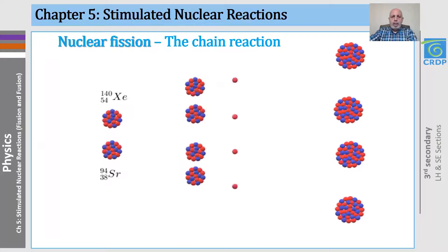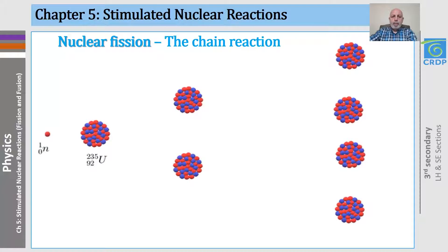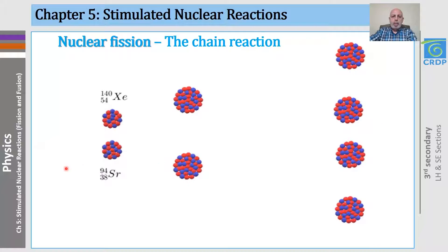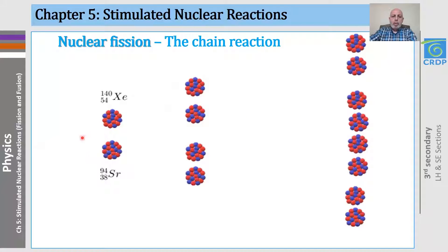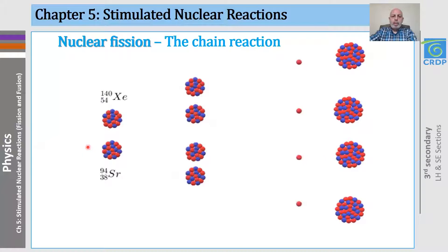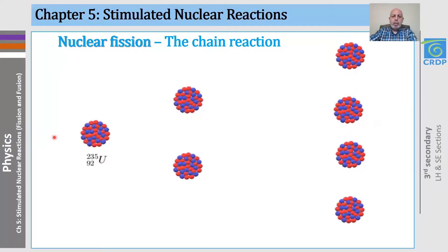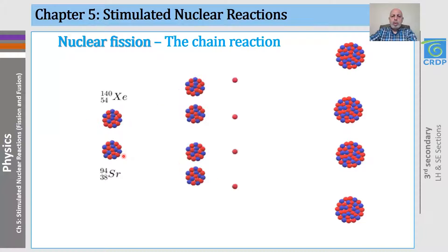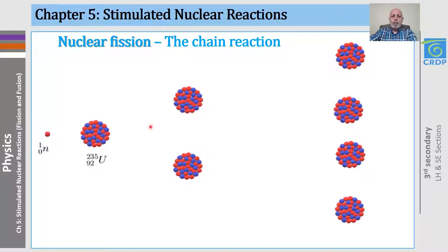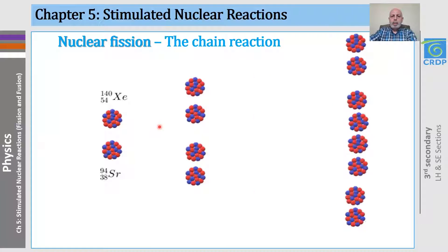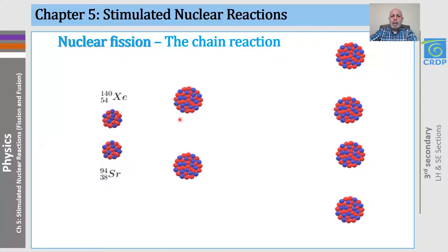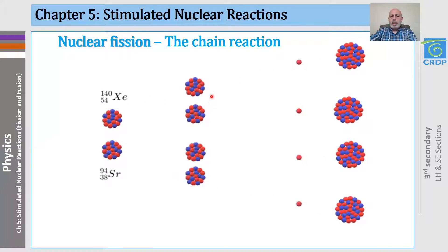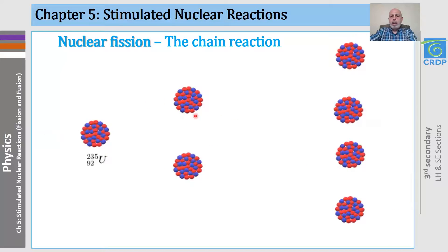Now, what is a chain reaction? This is an example of a chain reaction in which a uranium-235 nucleus is hit by a neutron. It is divided into two lighter nuclei with the emission of two neutrons. Each neutron is hitting another heavy nucleus and dividing it into two lighter nuclei and so on.